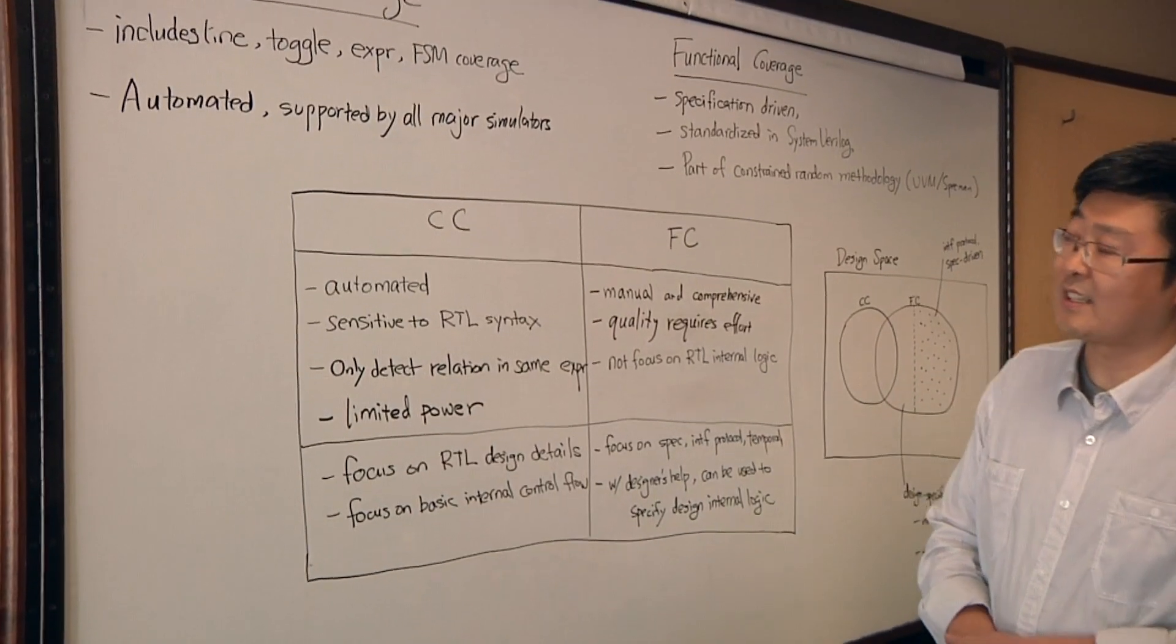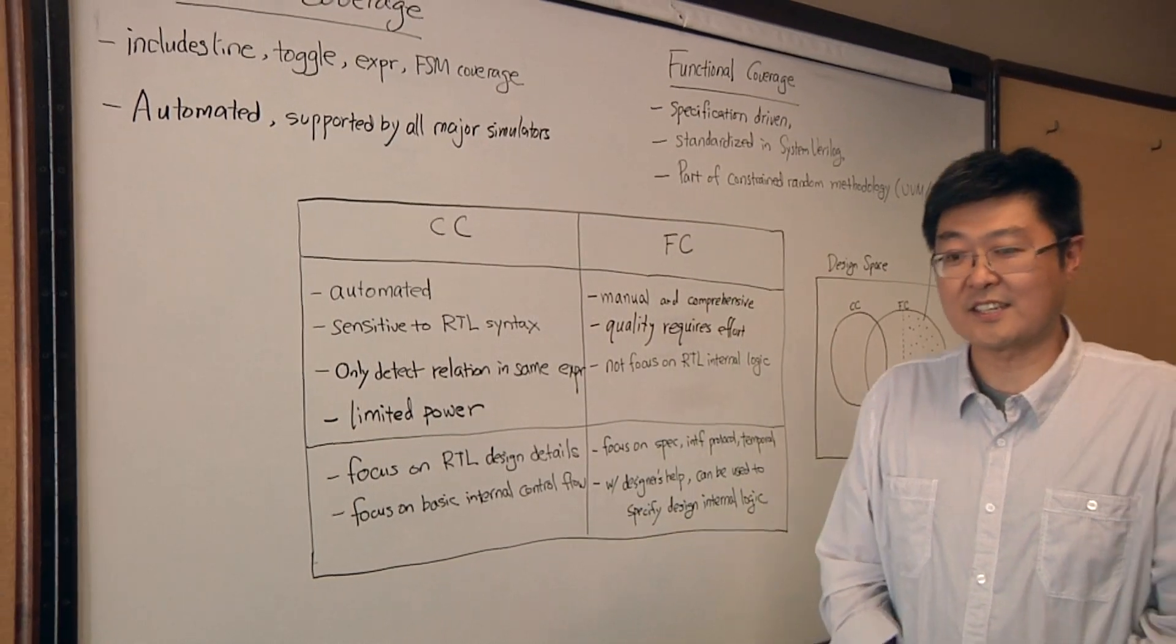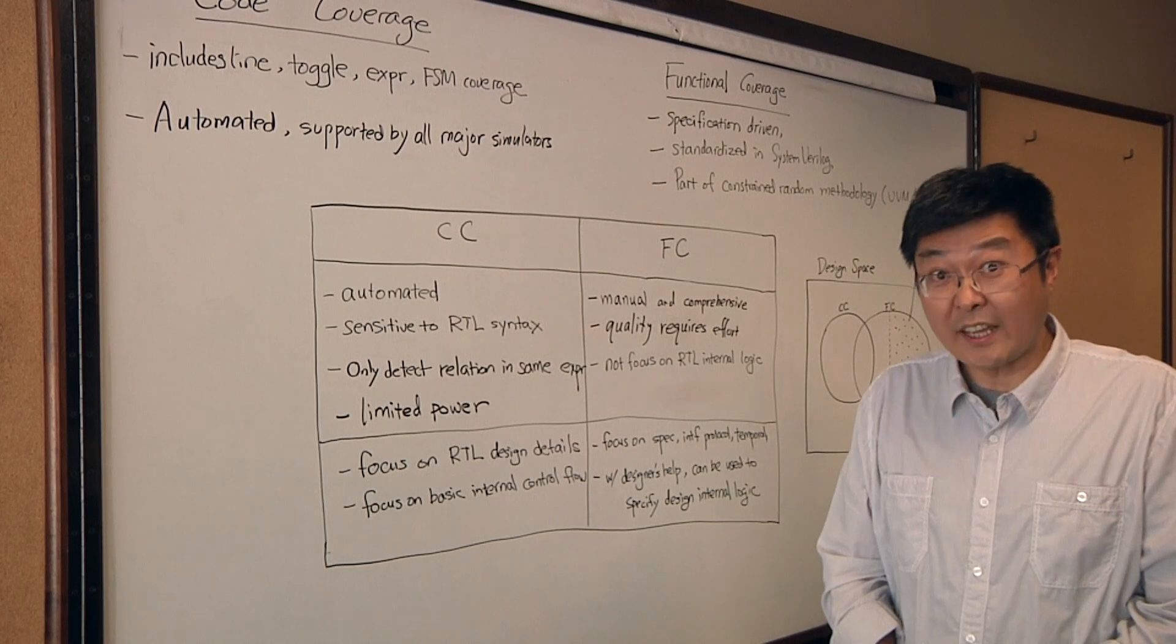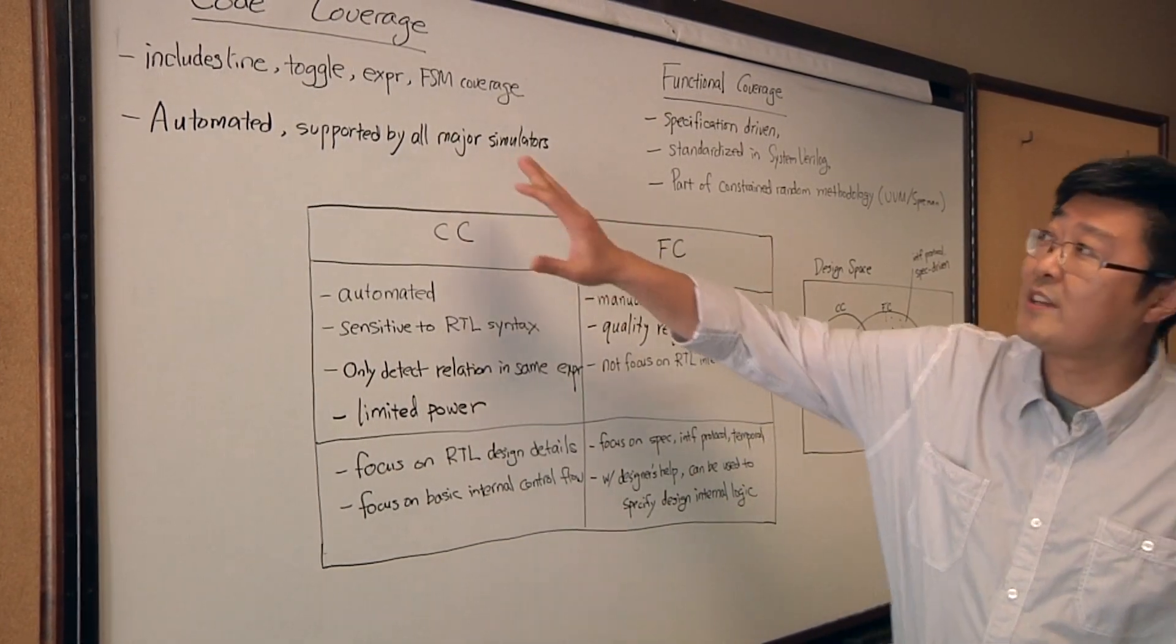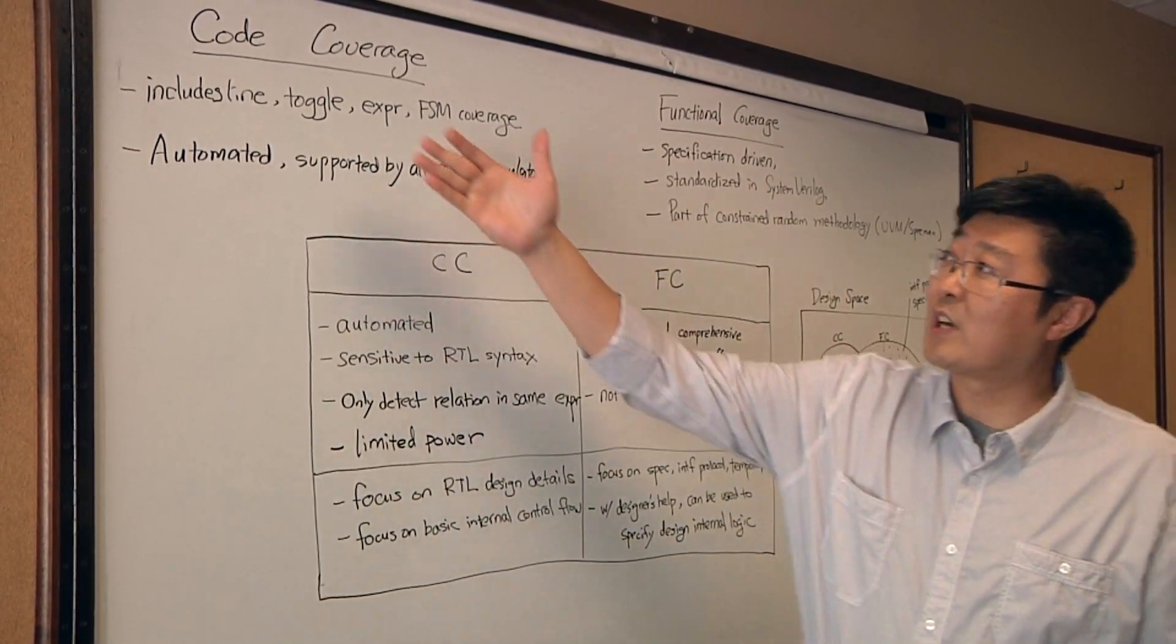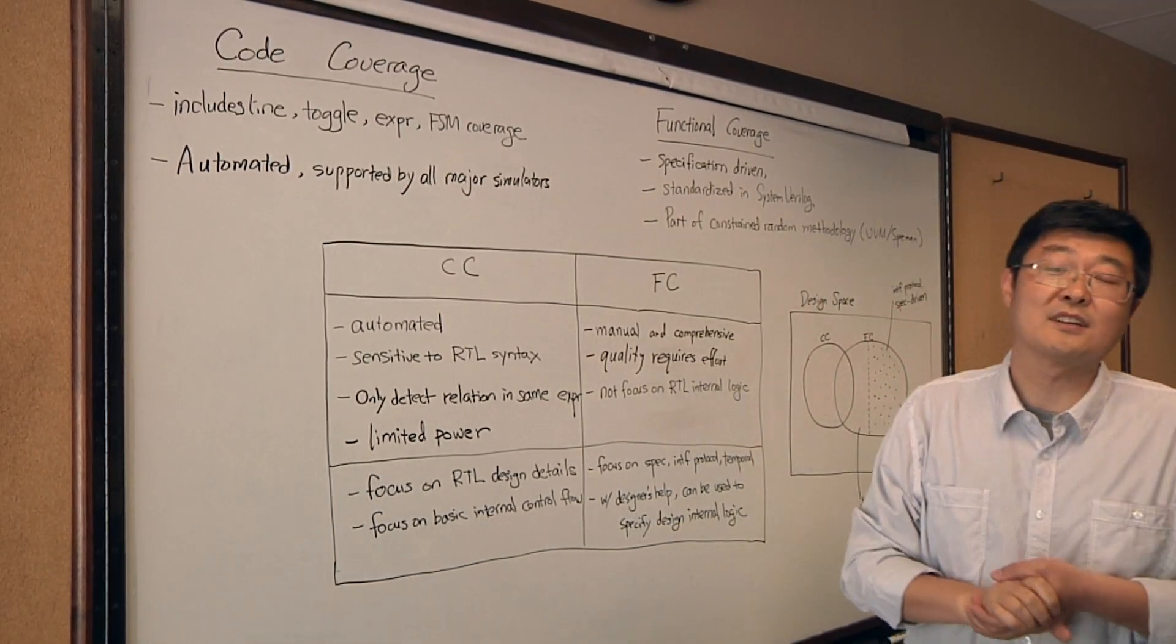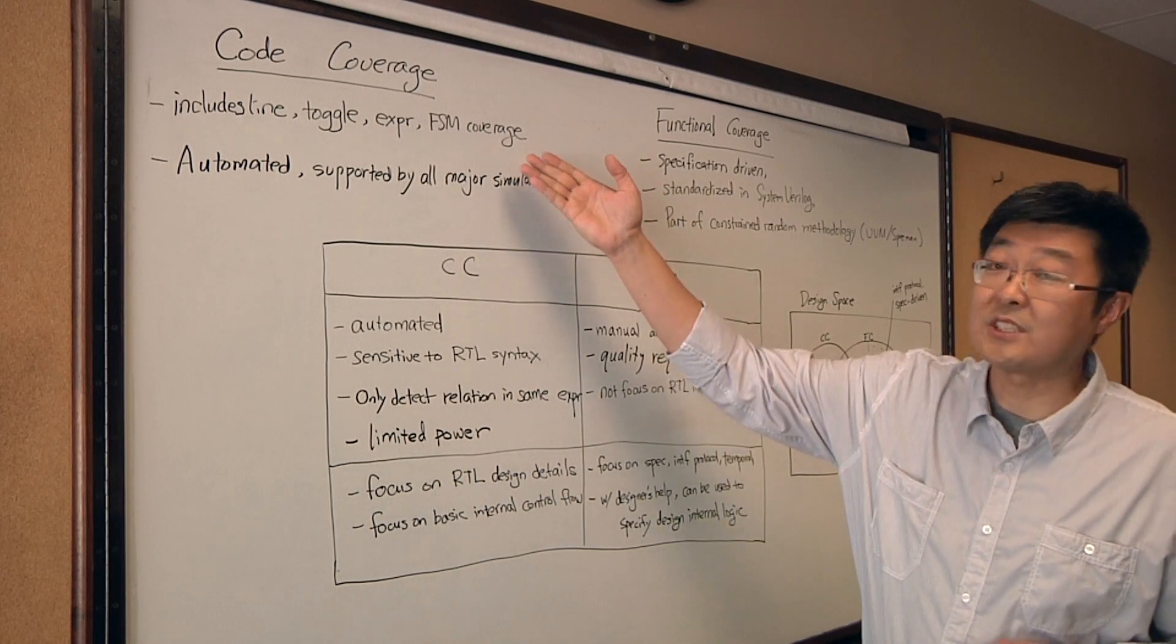So what are we looking at here? I just sketched the existing most important coverage metrics we use as of today for verification sign-off. There are primarily two methods: one is code coverage, the other is functional coverage. Code coverage typically includes line coverage, toggle coverage, expression coverage, sometimes called conditional coverage, as well as finite state machine coverage.